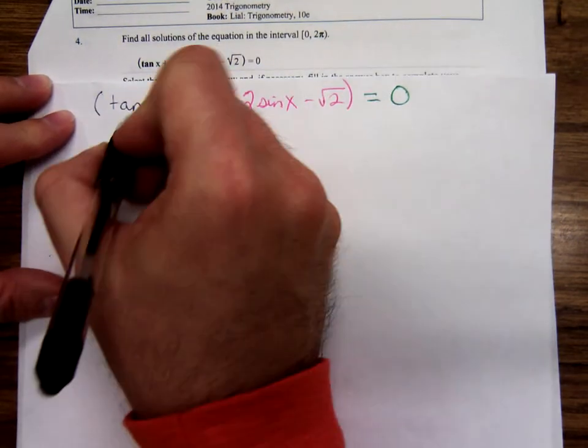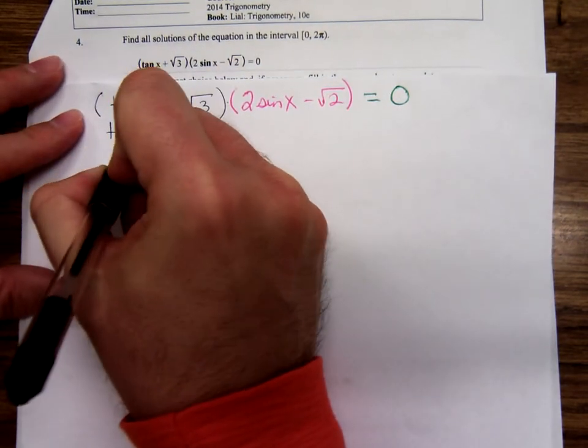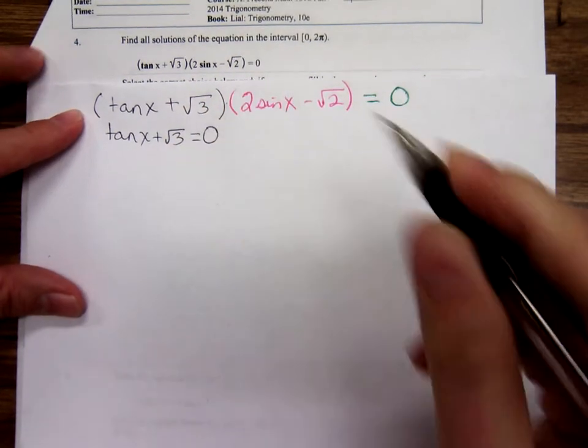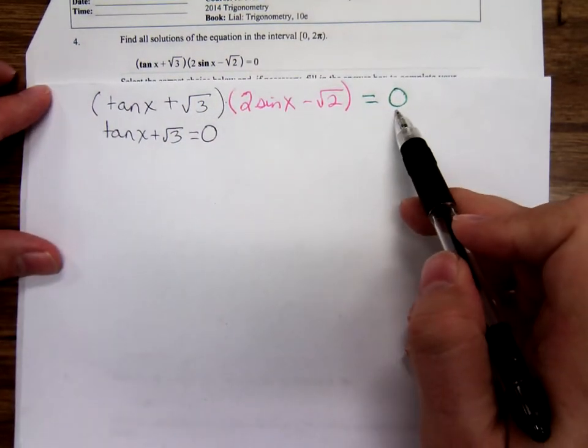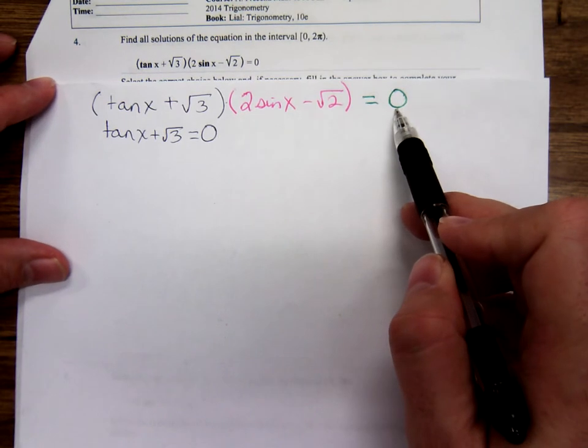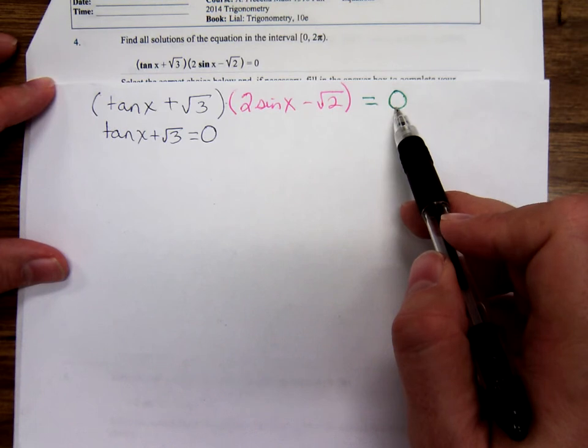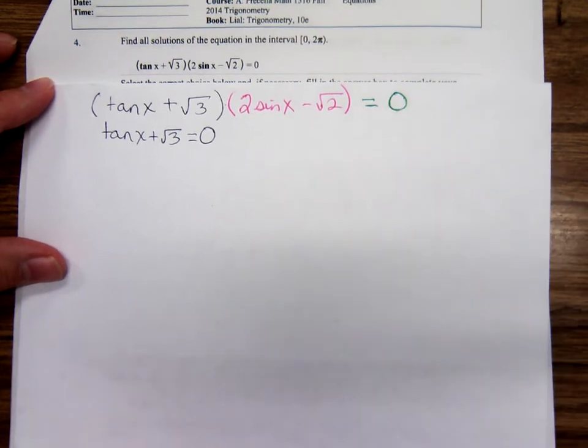So we're just going to take each one of these sets of parentheses, set it to zero, and be grateful that there's a zero there. If there were some number other than zero there, that would be a very difficult problem.